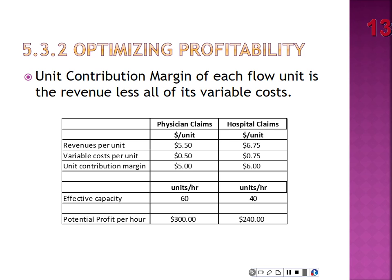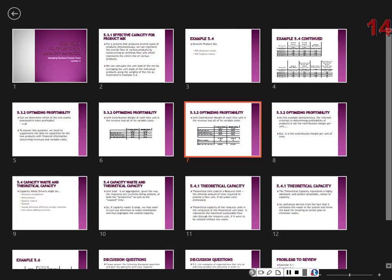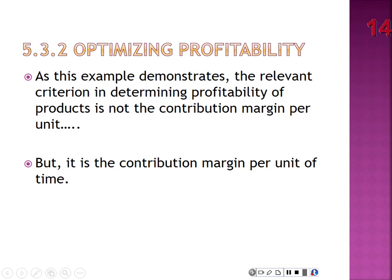For a physician claim, unit contribution is $5 per claim and effective capacity is 60 units per hour, giving potential profit of $300/hour. For hospital claims, the unit contribution margin is $6 per claim but they can only do 40/hour, so potential profit is $240/hour. The key lesson: the relevant criterion for profitability is contribution margin per unit of time, not contribution margin per unit.